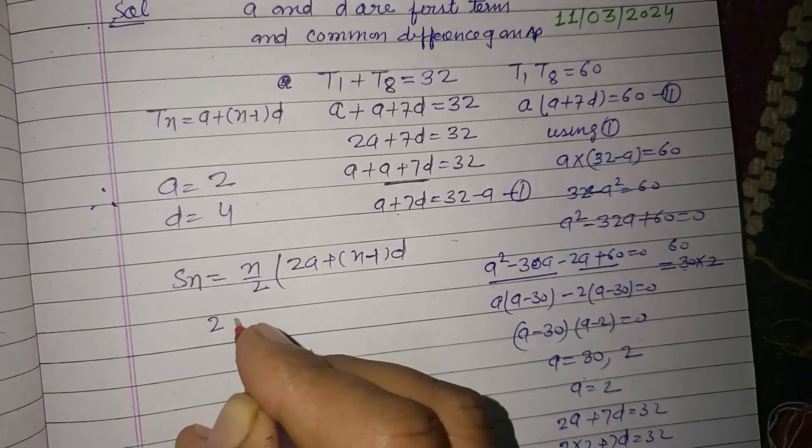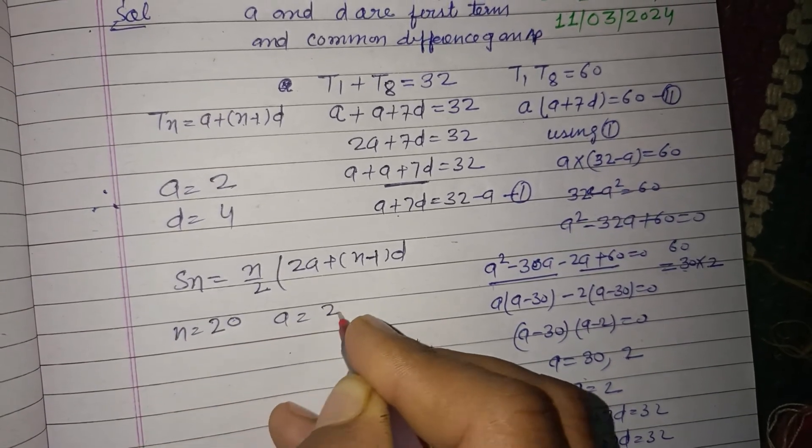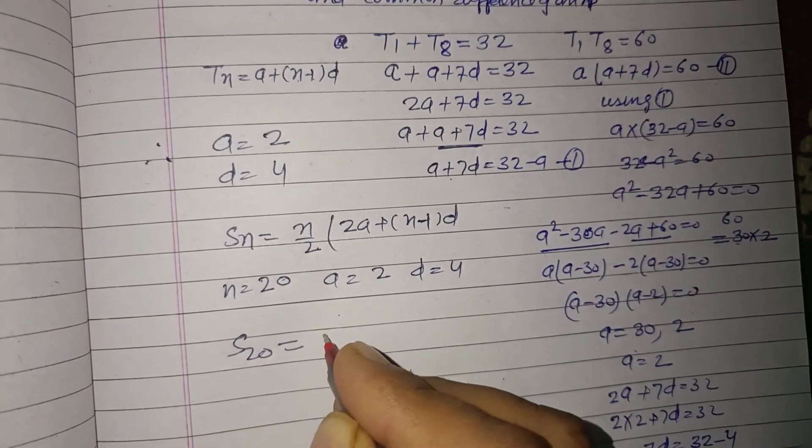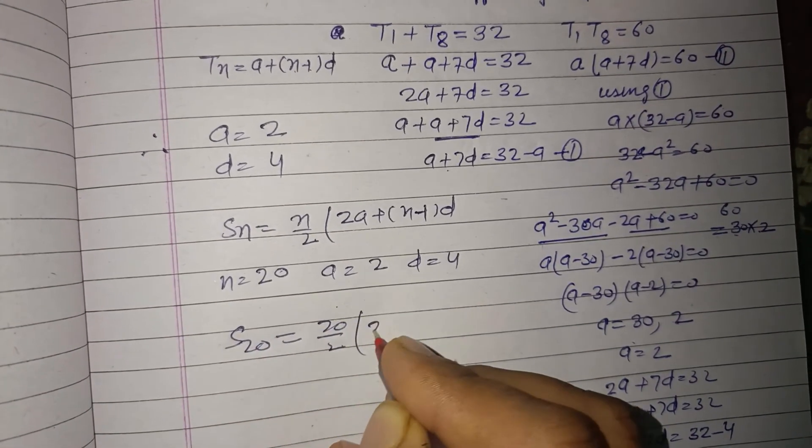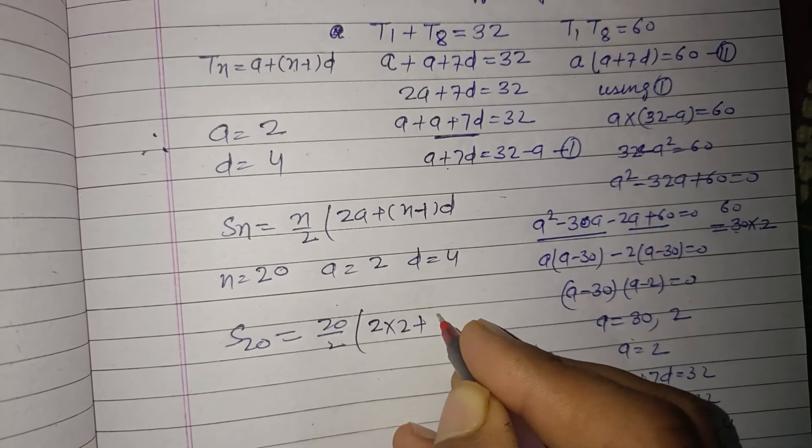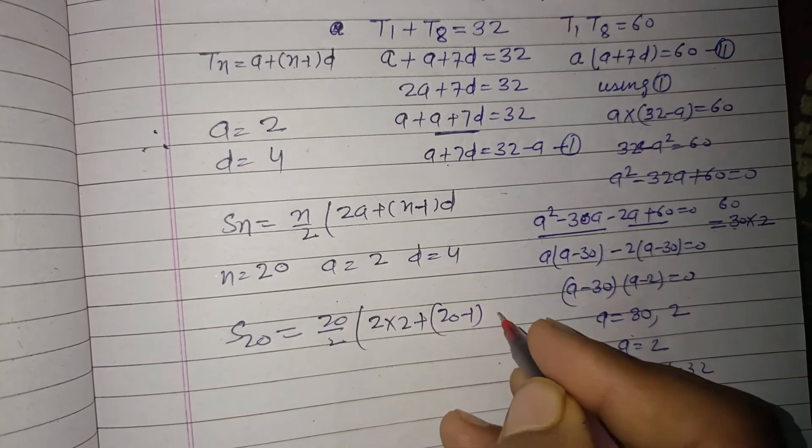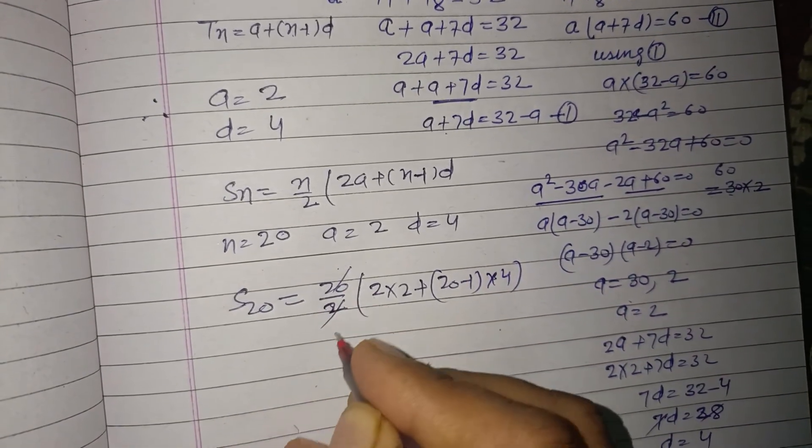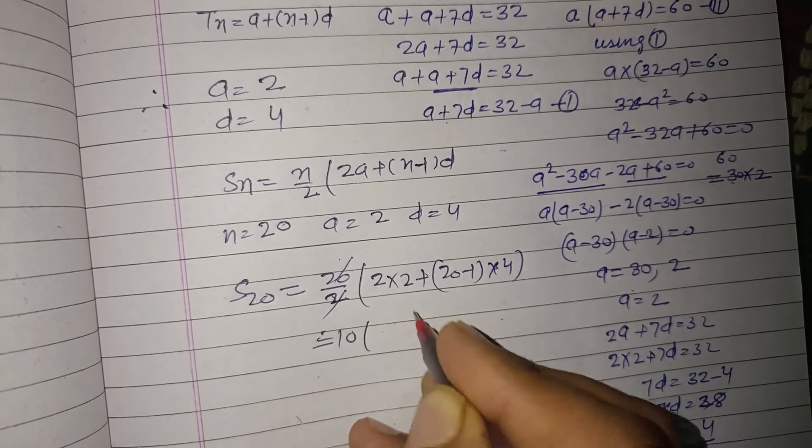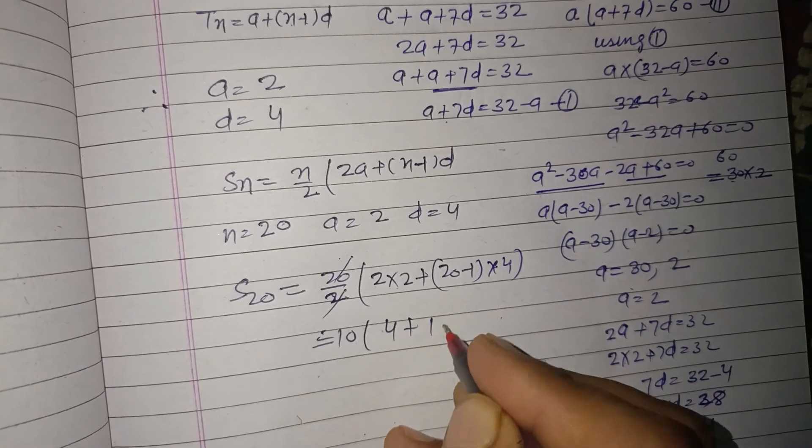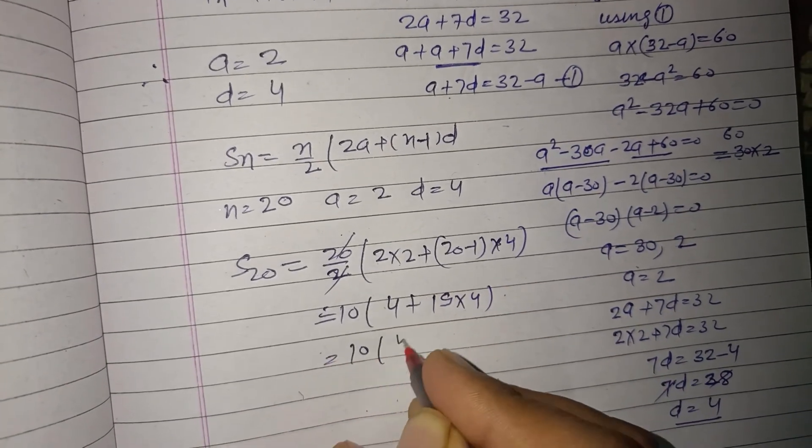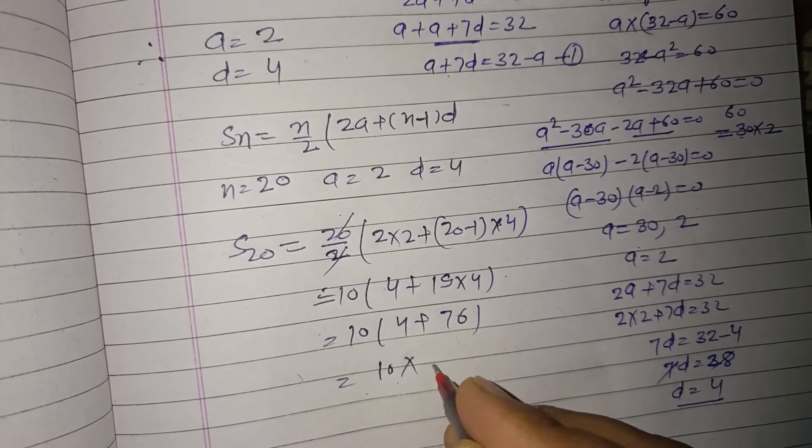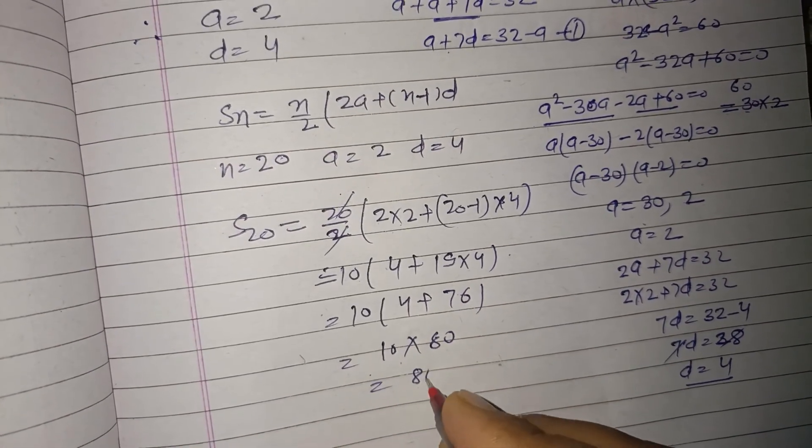Here n equals 20, a equals 2, d equals 4. So S20 equals 20/2 times (2 times 2 plus (20-1) times 4). This is 10 times (4 plus 19 times 4), which is 10 times (4 plus 76).